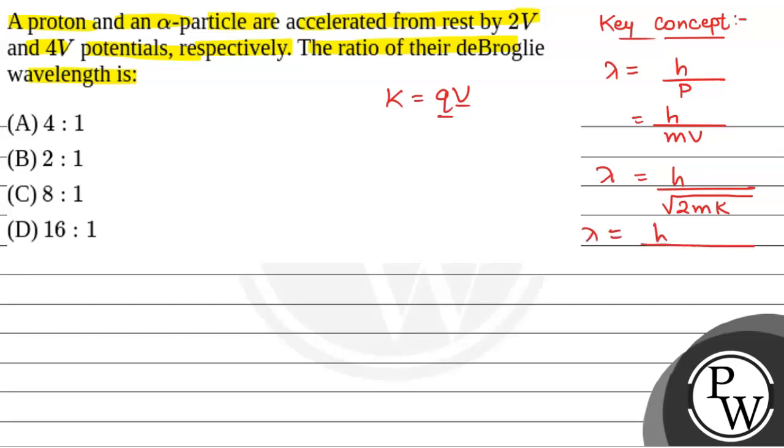So lambda will be equal to h by root under 2mqv. Now we have been given to compare the de Broglie wavelength of alpha particle and proton. So that will be equal to...